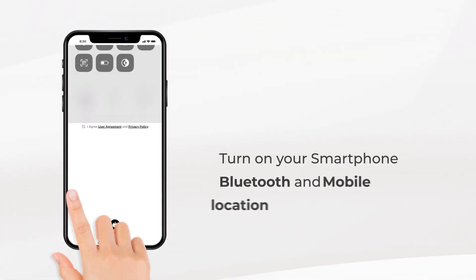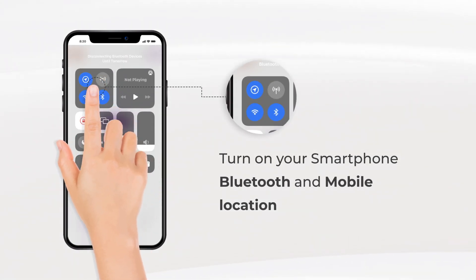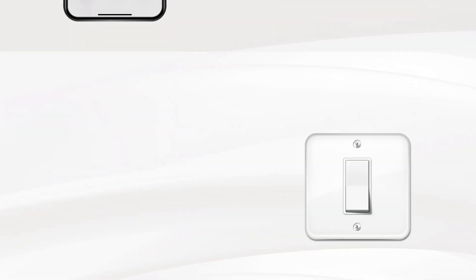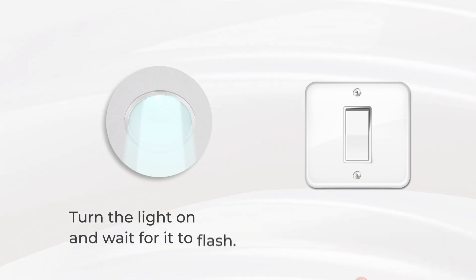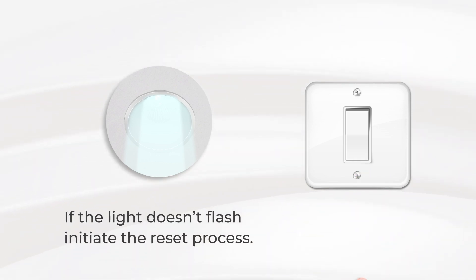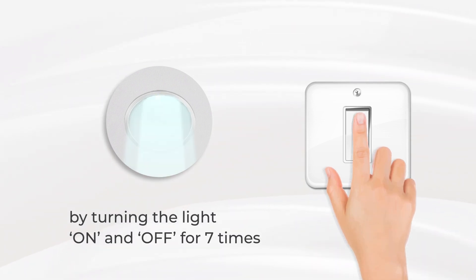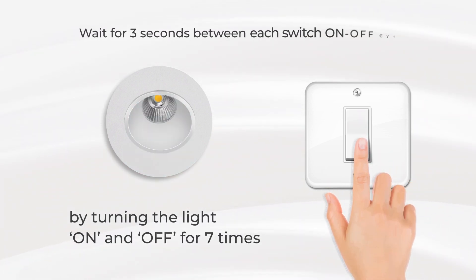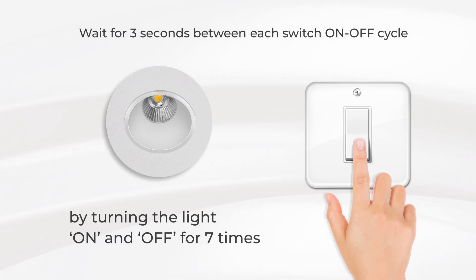Turn on your smartphone Bluetooth and mobile location. Turn the light on and wait for it to flash. If the light doesn't flash, initiate the reset process by turning the light on and off seven times.